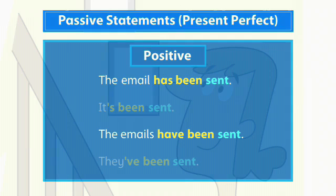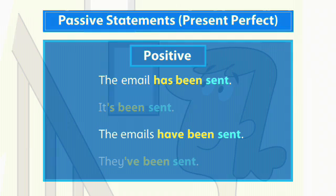We form the present perfect passive positive with 'has been' or 'have been' and the past participle of the main verb. We often use short forms in spoken conversation when using pronouns as the subject.